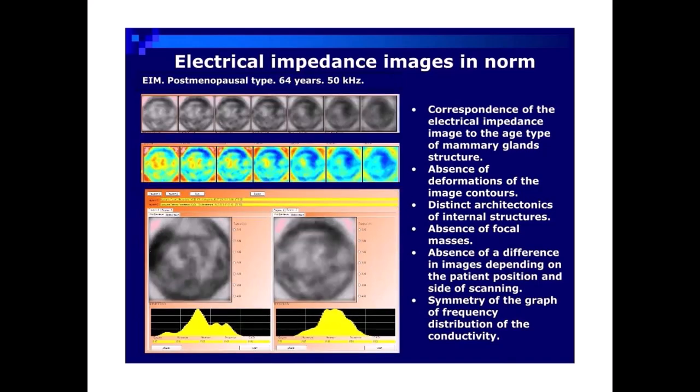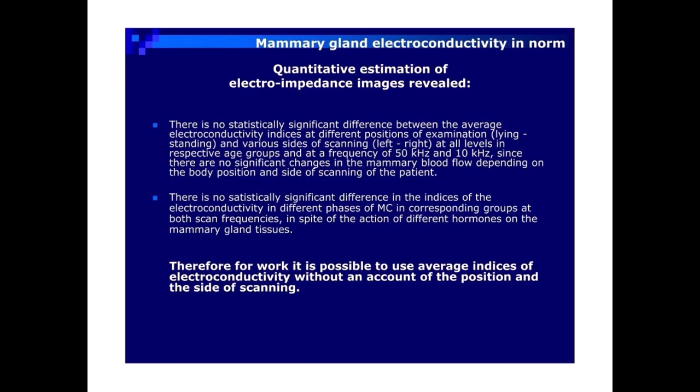EIM post-menopausal type, 63 years, 50 kHz. Correspondence of the electrical impedance image to the age type of mammary gland's structure. Absence of deformations of the image contours. Distinct architectonics of internal structures. Absence of focal masses. Absence of a difference in images depending on the patient position and side of scanning. Symmetry of the graph of frequency distribution of the conductivity. Mammary gland electroconductivity in norm.